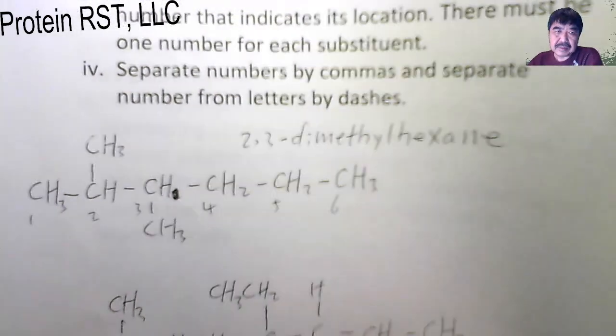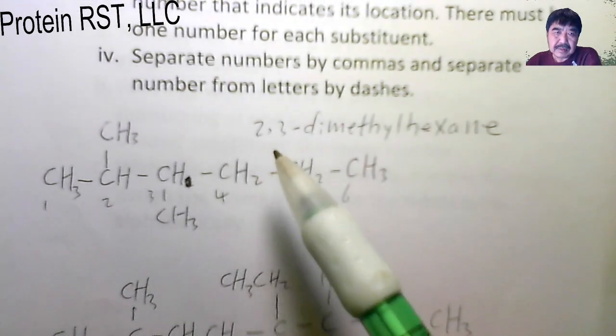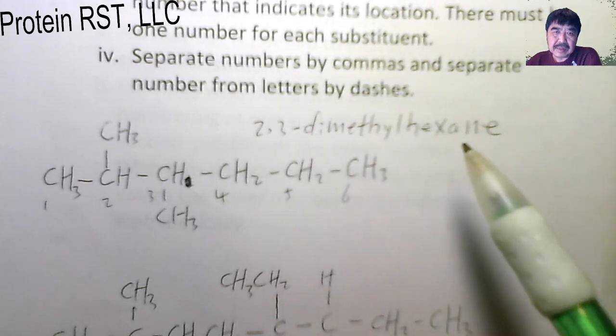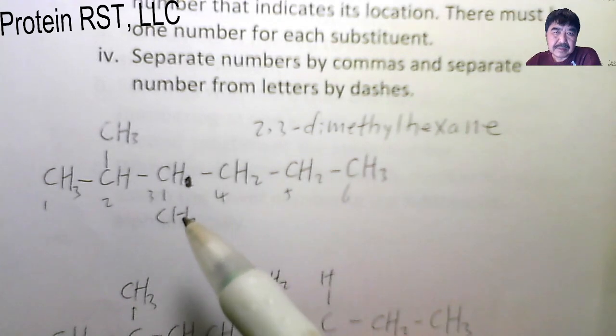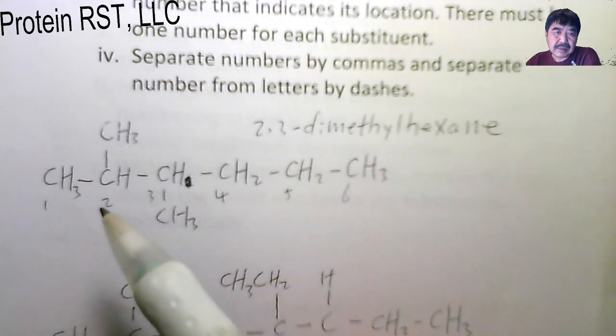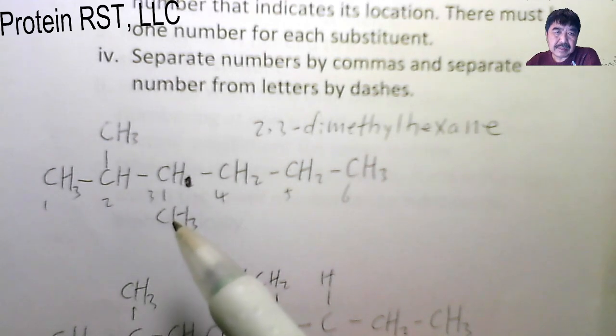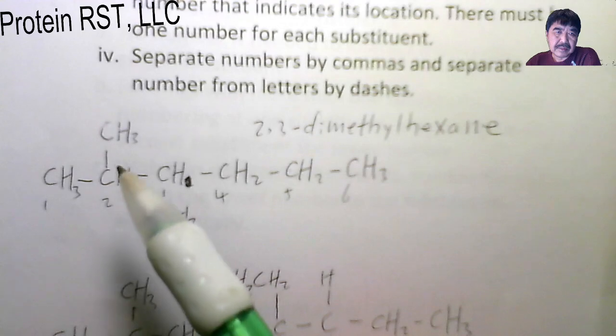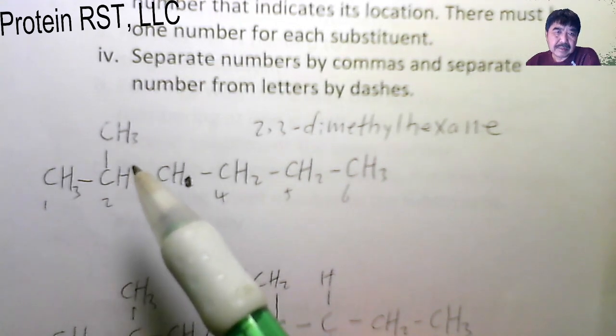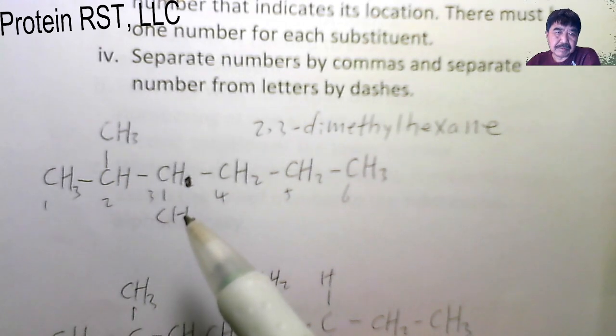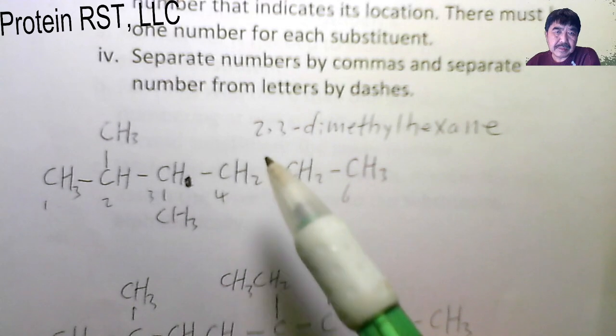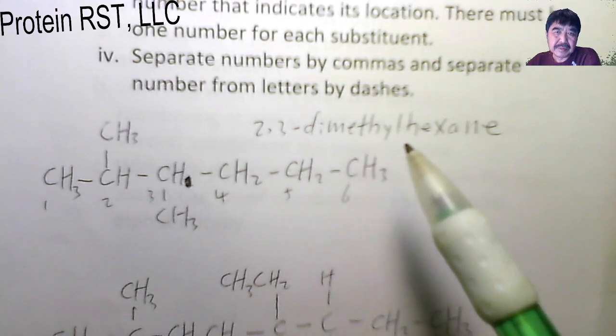Take a look at the examples. The first, this one is 2,3-dimethyl hexane. It's a six-carbon hexane. At the C2 and C3 positions, this molecule has methyl groups. So this compound is called 2,3-dimethyl hexane.